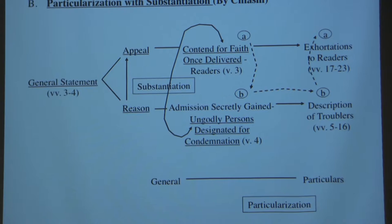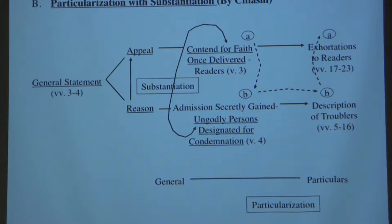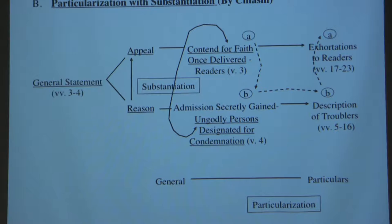Within the general statement itself you have a substantiation. He says: 'I am writing to you to appeal to contend for the faith which was once for all delivered to the saints, because admission has been secretly gained by some who long ago were designated for this condemnation, ungodly persons who pervert the grace of our God into licentiousness and deny our only Master and Lord Jesus Christ.' So you actually have within the general statement a substantiation.